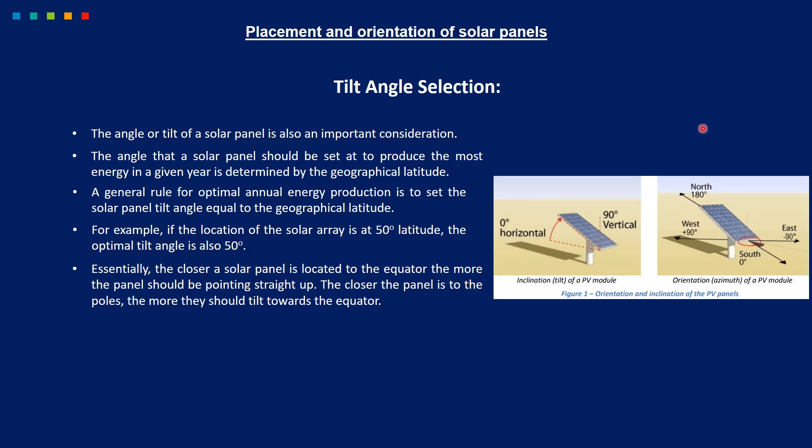The closer a solar panel is located to the equator, the more the panel should be pointing straight up. The closer the panel is to the poles, the more it should be tilting towards the equator.